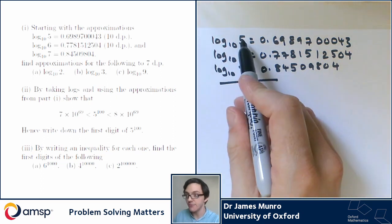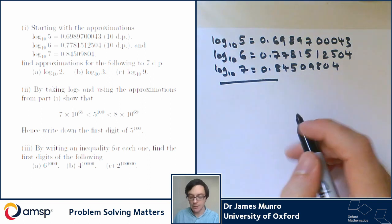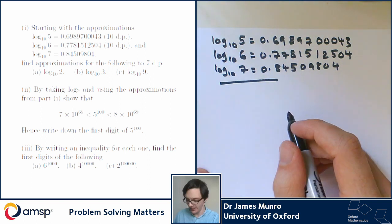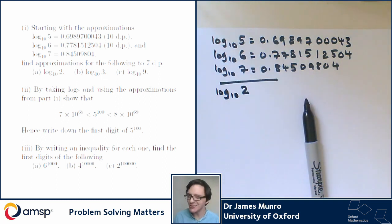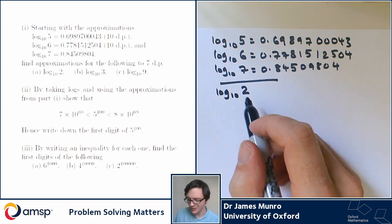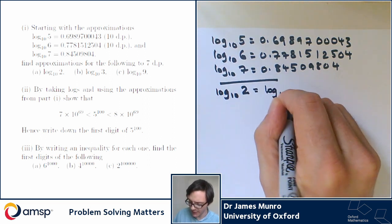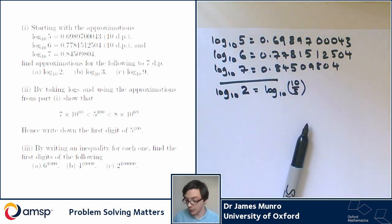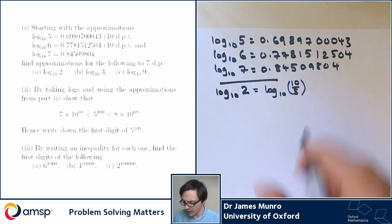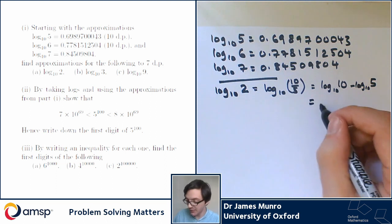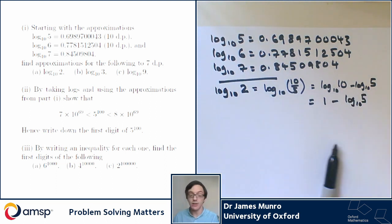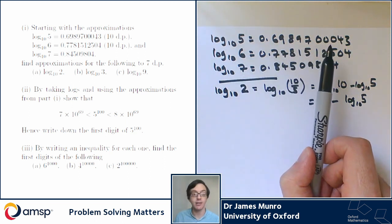We've been given the values of log base 10 of 5, log base 10 of 6, and log base 10 of 7 to a huge number of decimal places, and we're asked to work out log base 10 of 2, 3, and 9. The first thing I think of when I see 2 and 10 in the same problem: 2 times 5 equals 10, so 2 is one of the factors of 10. My plan is to write down true statements involving logarithms until I can make progress. So 2 = 10/5, which means log₁₀(2) = log₁₀(10) − log₁₀(5) = 1 − log₁₀(5).